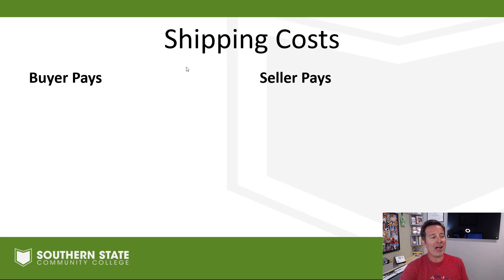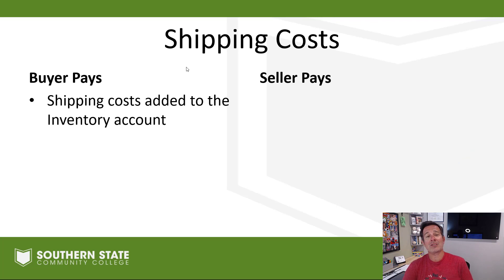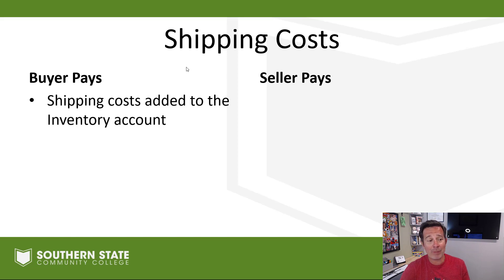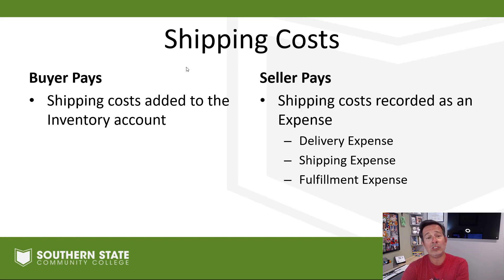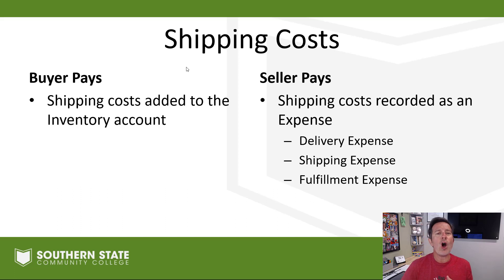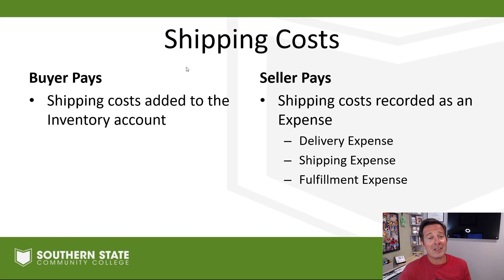Here's the rundown: if the buyer pays, shipping costs are going to be added to the inventory account. It's just another component of inventory cost — it gets added right into the asset account. No special account needed; you just dump those costs into inventory.